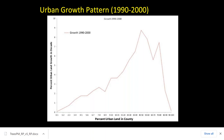Urban land here refers to Census-defined areas of at least 500 people per square mile. The scary trend is that as areas become more urbanized, growth rates go up — an accelerating growth phase — until we reach a plateau consuming almost all rural lands. This was the pattern from 1990 to 2000.